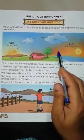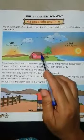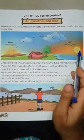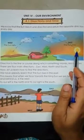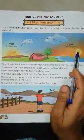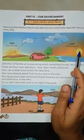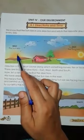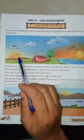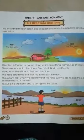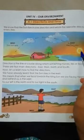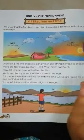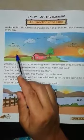Look at this picture, students. What do you see in this picture? See here, the sun rises. In which direction does the sun rise? Sun rises in the east direction. And in which direction does the sun set? Sunset is in the west direction. So remember everyone, the sun rises in the east direction and sun sets in the west direction.